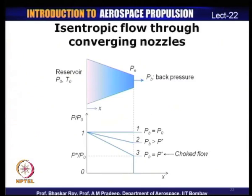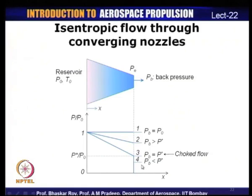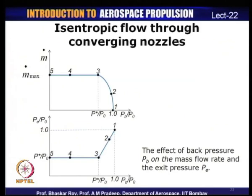The point when back pressure equals the critical pressure is known as the choked condition or choked flow, with pressure ratio P*/P₀ depending only on ratio of specific heats. For any back pressure lower than that, we continuously see a decrease in pressure ratios, but even reducing back pressure to zero will not change the exit Mach number — it remains M = 1 because it is a choked flow.